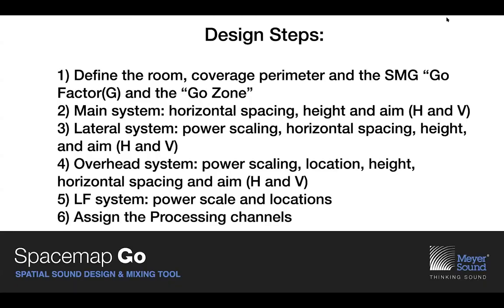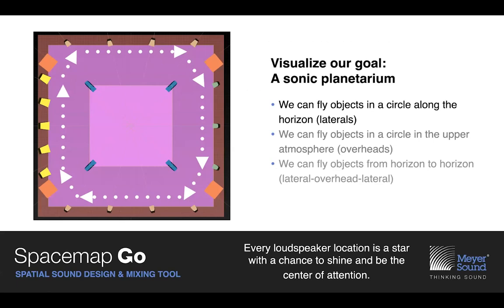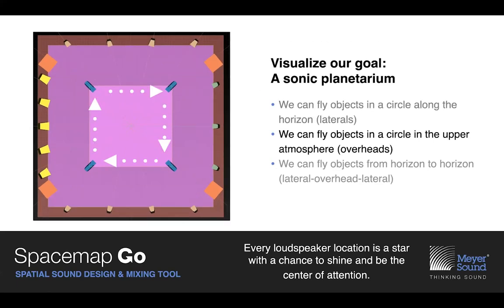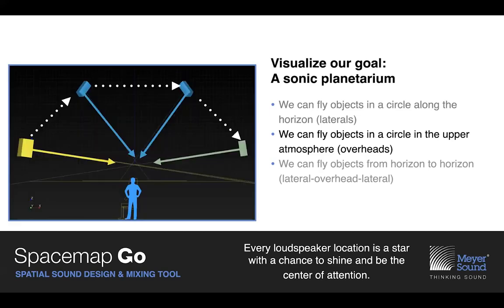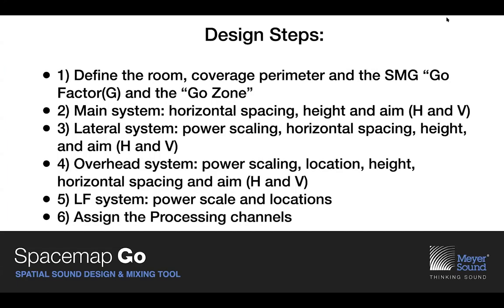We are going to continue from where we started last week. If you haven't seen last week's seminar, it's been uploaded. We'll take a few moments to review the six design steps for a SpaceMap Go design — a 360-degree horizontal and overhead system I call the sonic planetarium. With SpaceMap, you can fly 32 helicopters all with different trajectories simultaneously through that space.